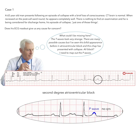This changes our view of the strip. Clearly, in this group, there is progressive PR interval prolongation before a P-wave fails to conduct. This is a case of Mobitz type 1, second-degree AV block.